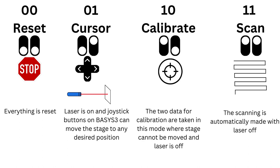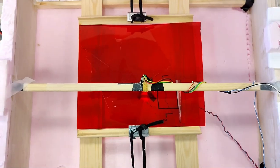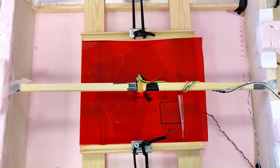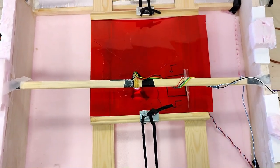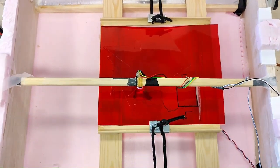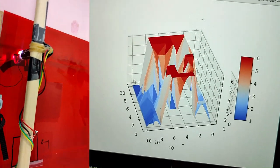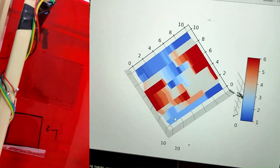Therefore, our system will be calibrated to any pure material. The new data taken in scanning mode will be divided by this calibration value to find the number of layers on our sample. In scanning mode, a finite state machine is used, and 50 data points are received per second and sent to our Python code. It draws a snake-like pattern to scan the entire surface in 2D, and all the collected data is used to draw a 3D plot.